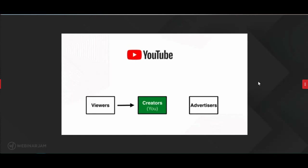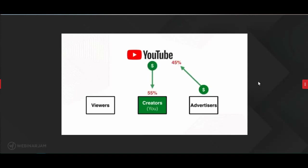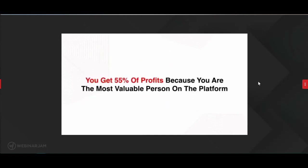YouTube can't put an ad in front of your video and give you nothing — you're the most valuable person. So YouTube said: because creators are allowing advertisers to reach viewers, we're going to do something generous. We're going to give creators 55% of the money advertisers pay us. That's right — the money advertisers give to YouTube, you keep 55% of it. You're the most valuable person on the platform — who people are there to watch — so you get the majority of the profits.